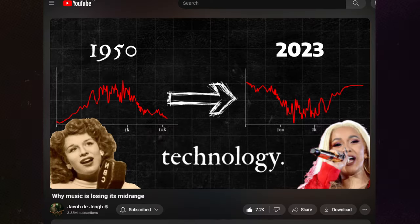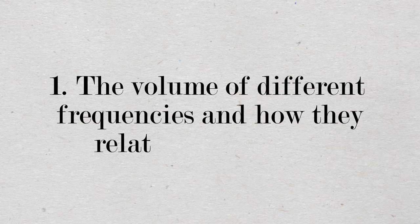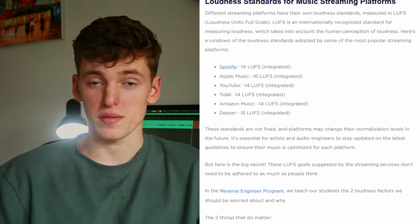This explains the lows and the highs being turned up — but what about the mids? Why have they been turned down? At this point, we have to go back to the definition of EQ: the volume of different frequencies and how they relate to each other. Meaning that if the low-end and high-end is turned up, the mix is louder. And when it's turned down to compensate — which all streaming services do — this in effect means the mids have been turned down.